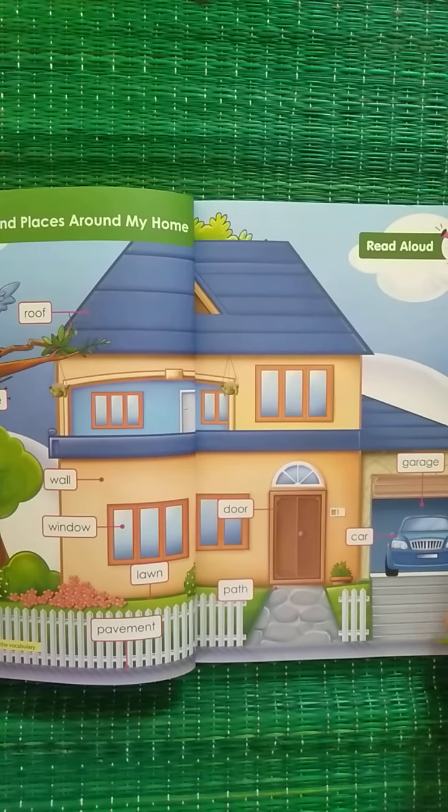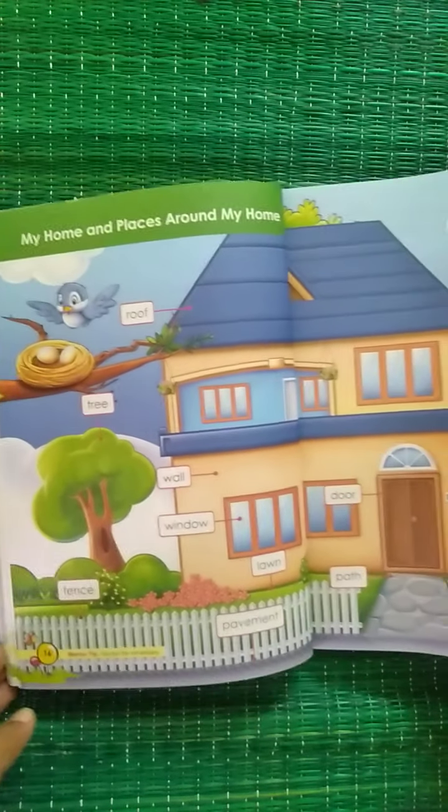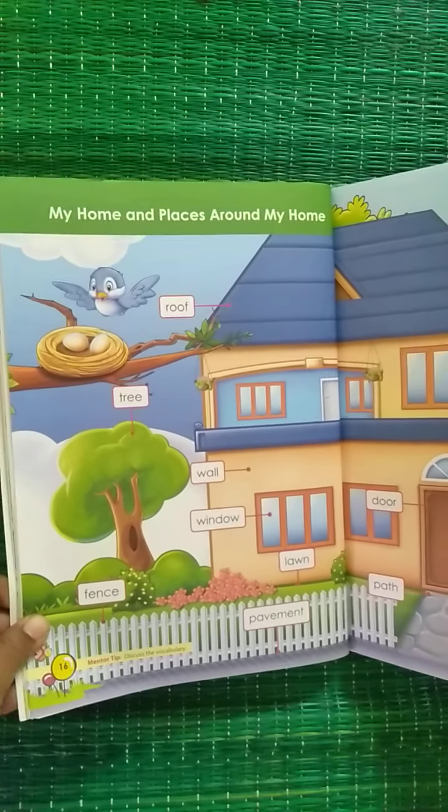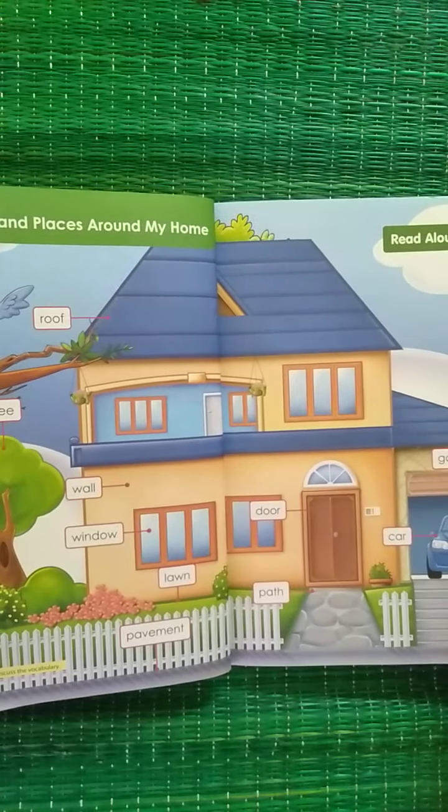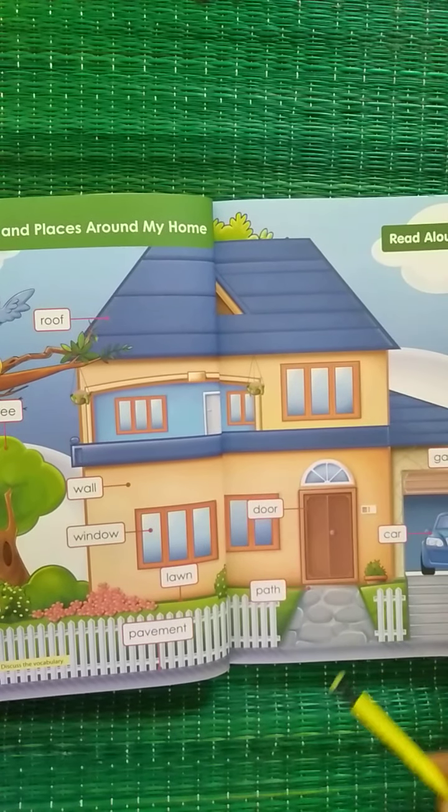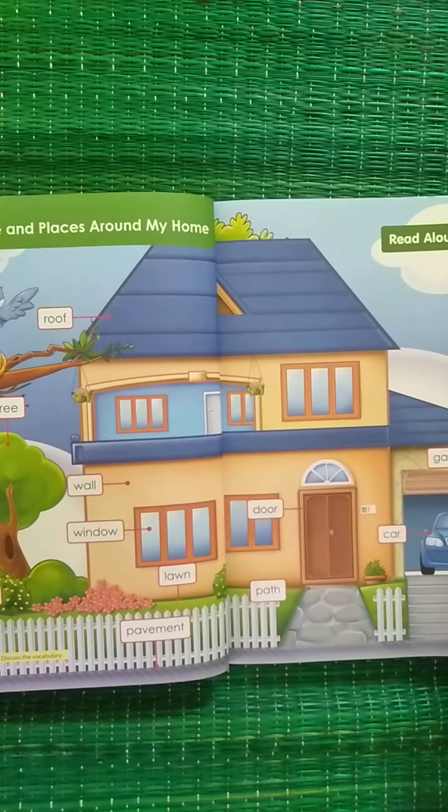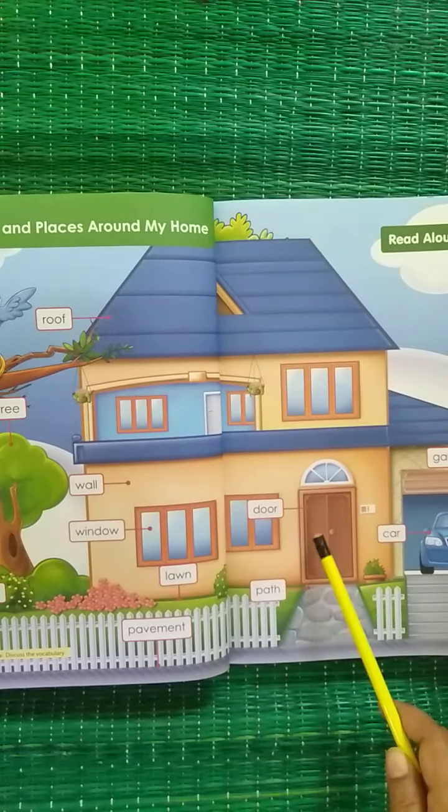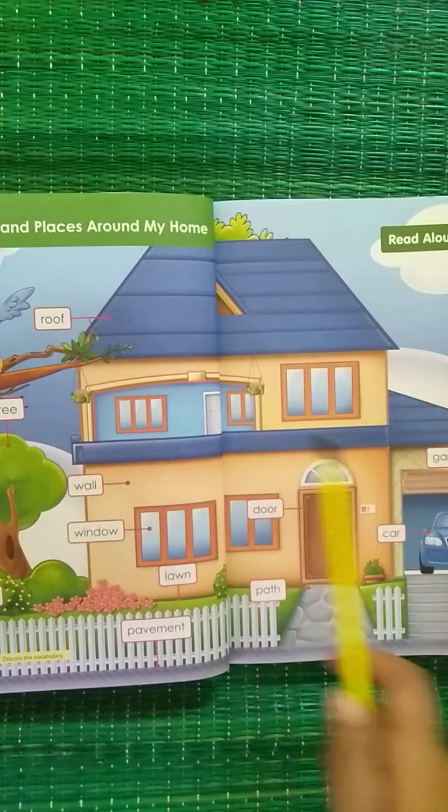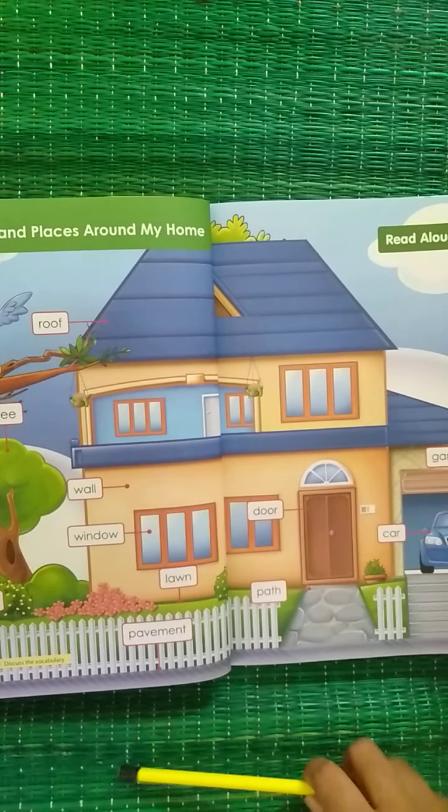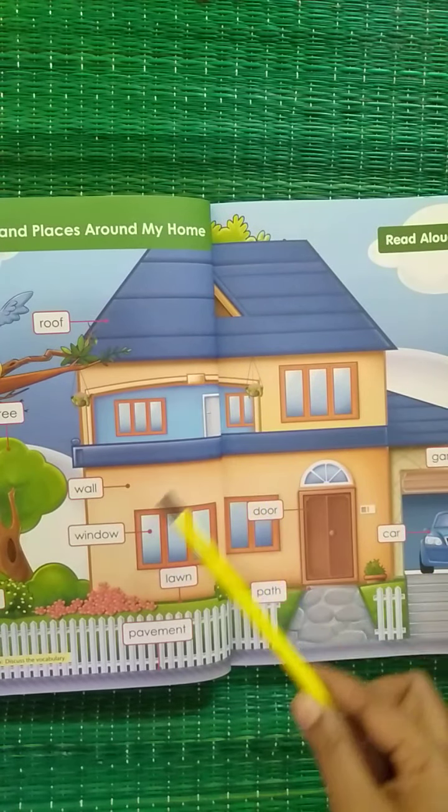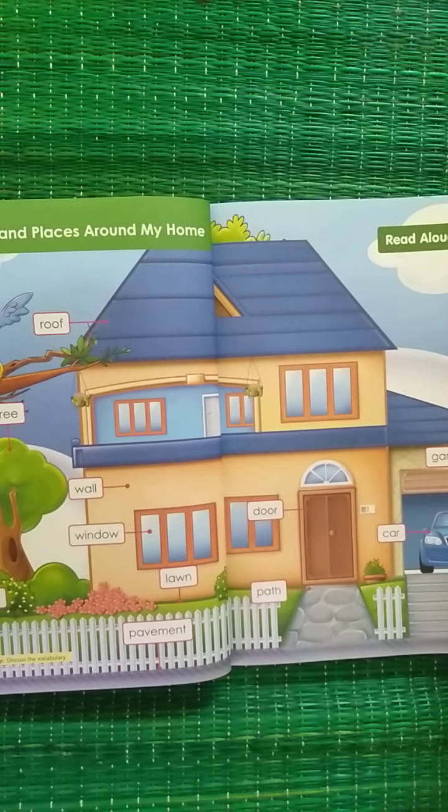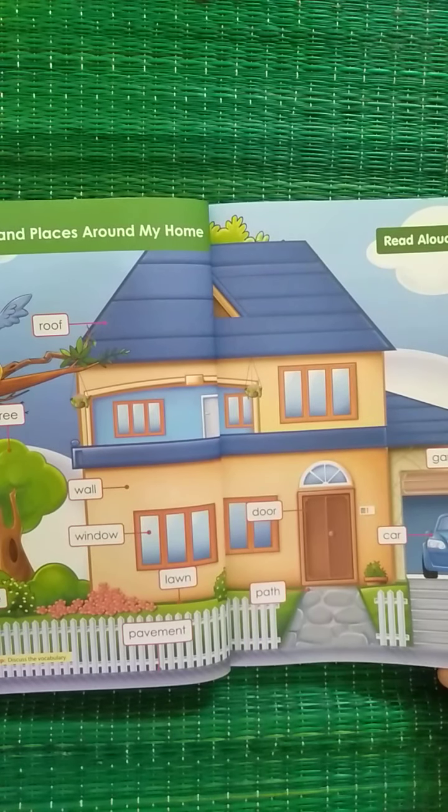Okay children, take out your little explorer book and turn to page 16 and 17. Now what do we see in the picture? We see a beautiful big house, isn't it? Now today we are going to learn different parts of your home and the places around your house. Okay, now everybody, everything here has a name. So today you are going to learn the names of different parts of your house and places around it.